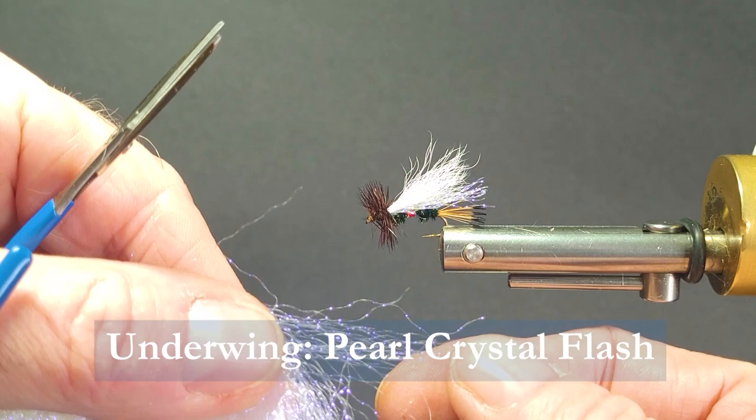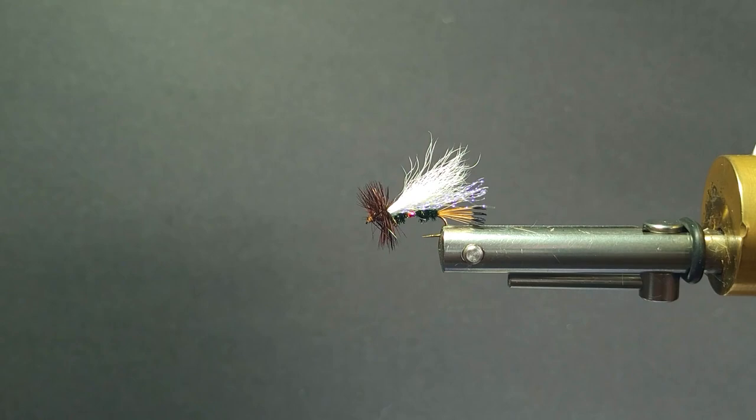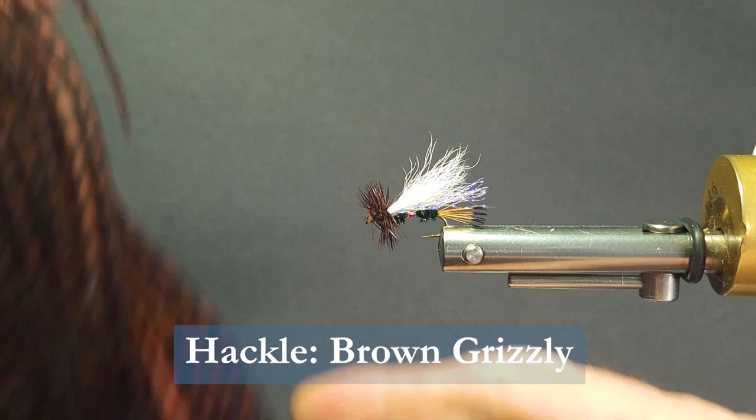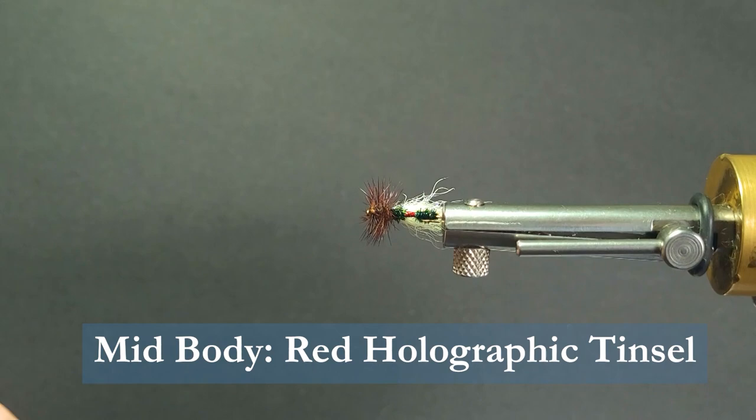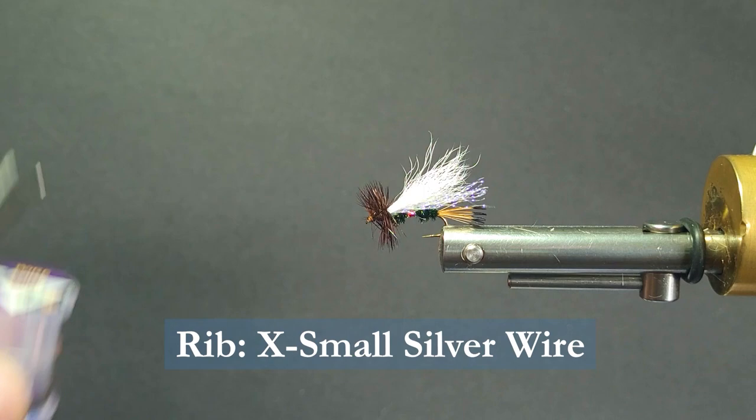I'm going to be using some brown grizzly on the front for the thorax. I'm going to be using some red holographic tinsel instead of the floss. And then I use a little extra small wire just to reinforce my pattern, give a little extra strength so that fish don't chew up that peacock hurl.